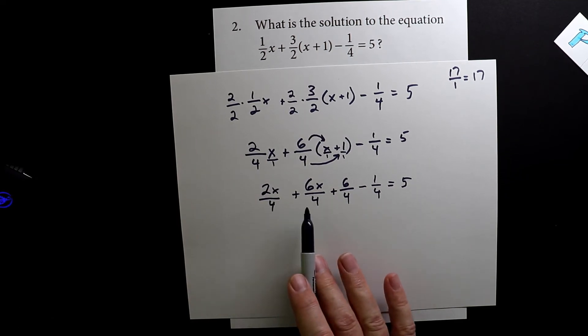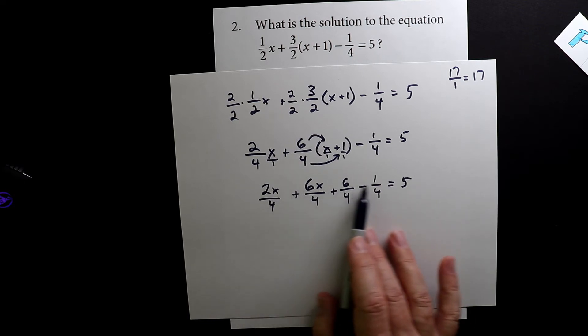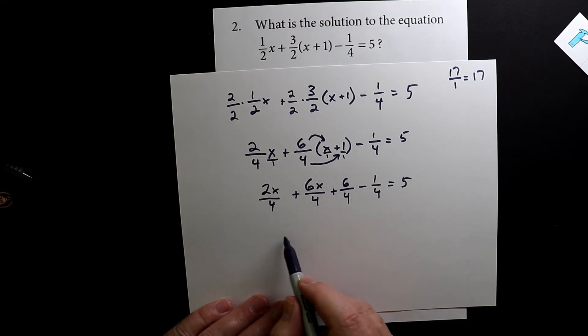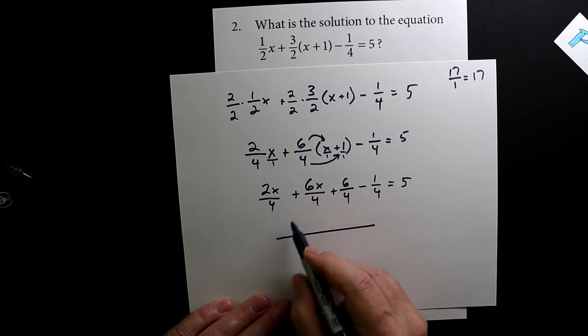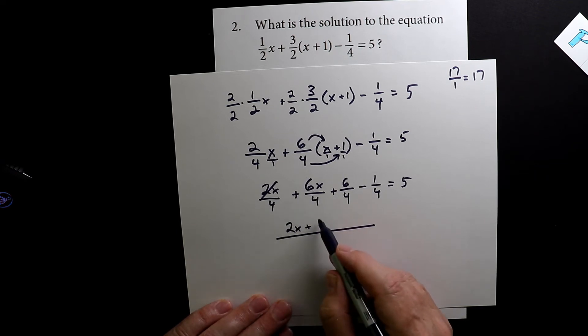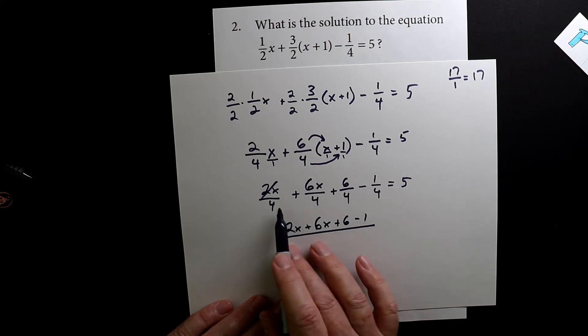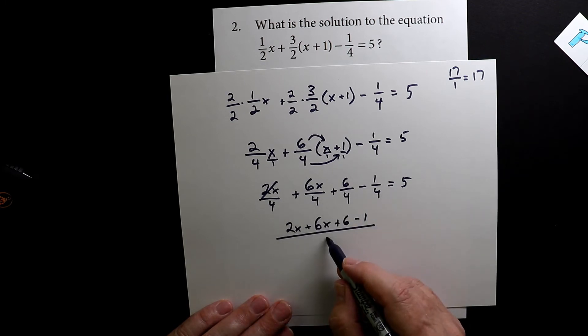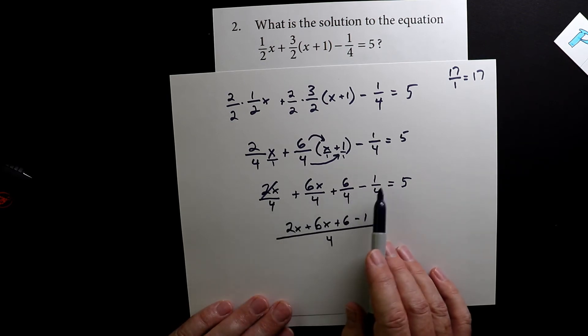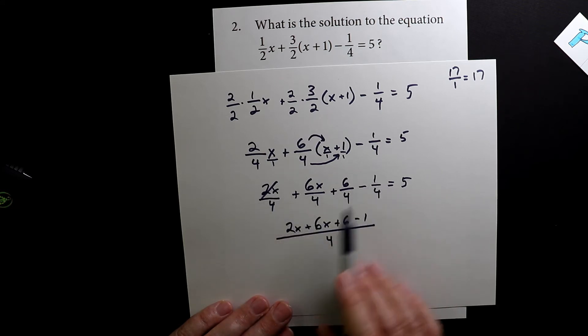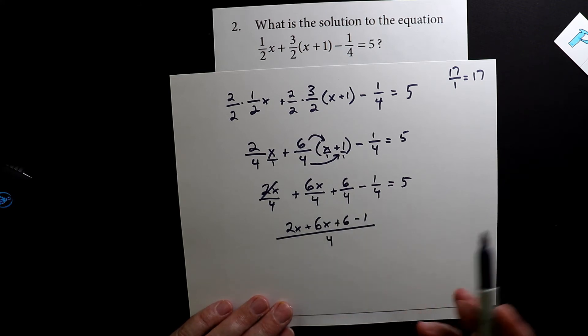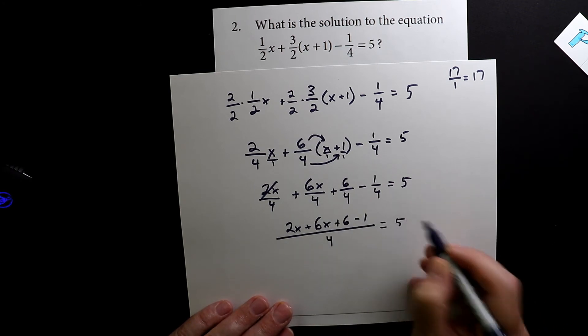So now that we have all of the denominators the same, we can rewrite this entire mess like this: two x plus six x plus six minus one, and they're all over four. So it's already starting to look a little bit neater because we've taken all of the numerators, we've moved them up top here. And since it's all the same denominator, we can just put one four on the bottom and this all equals five.